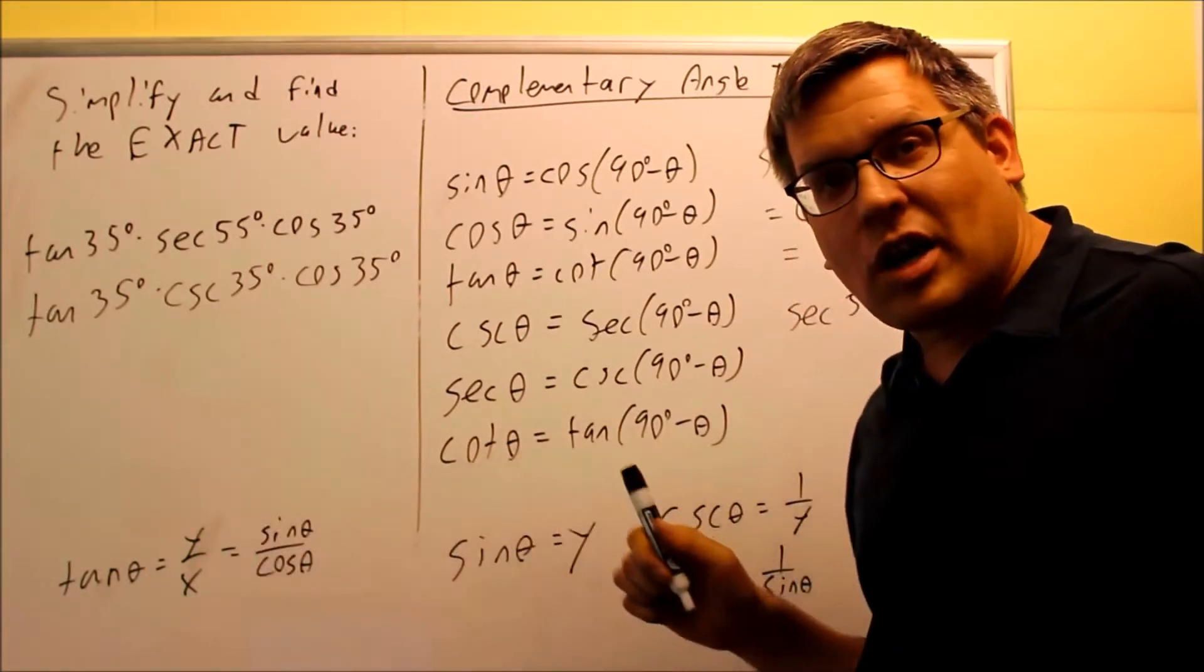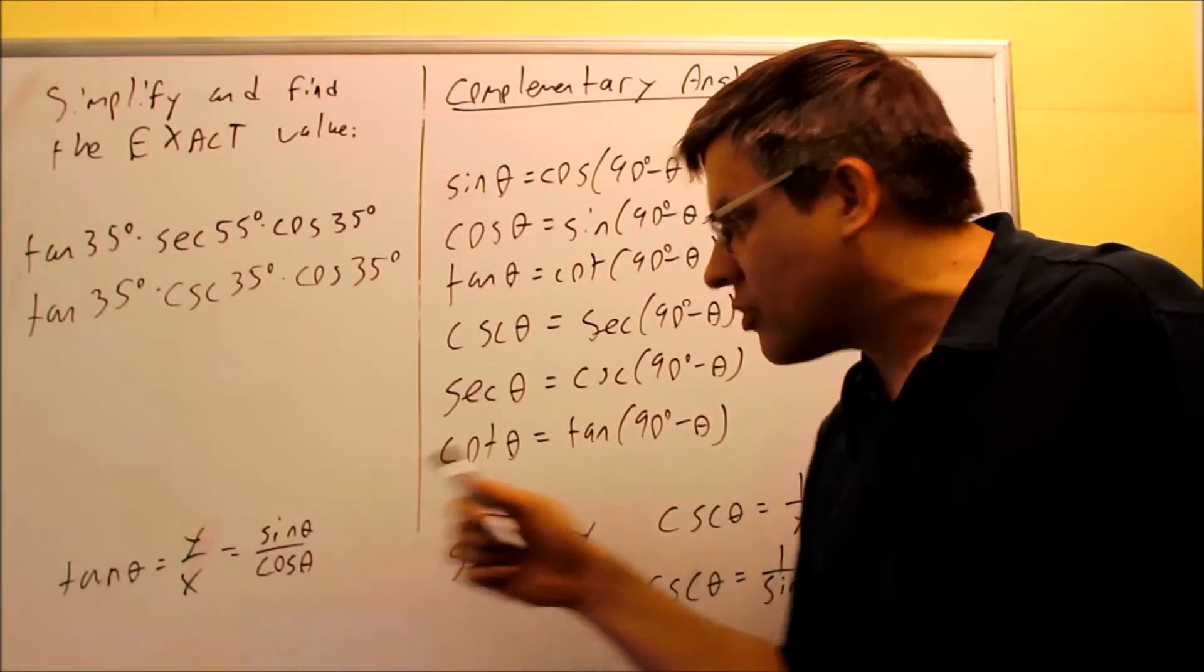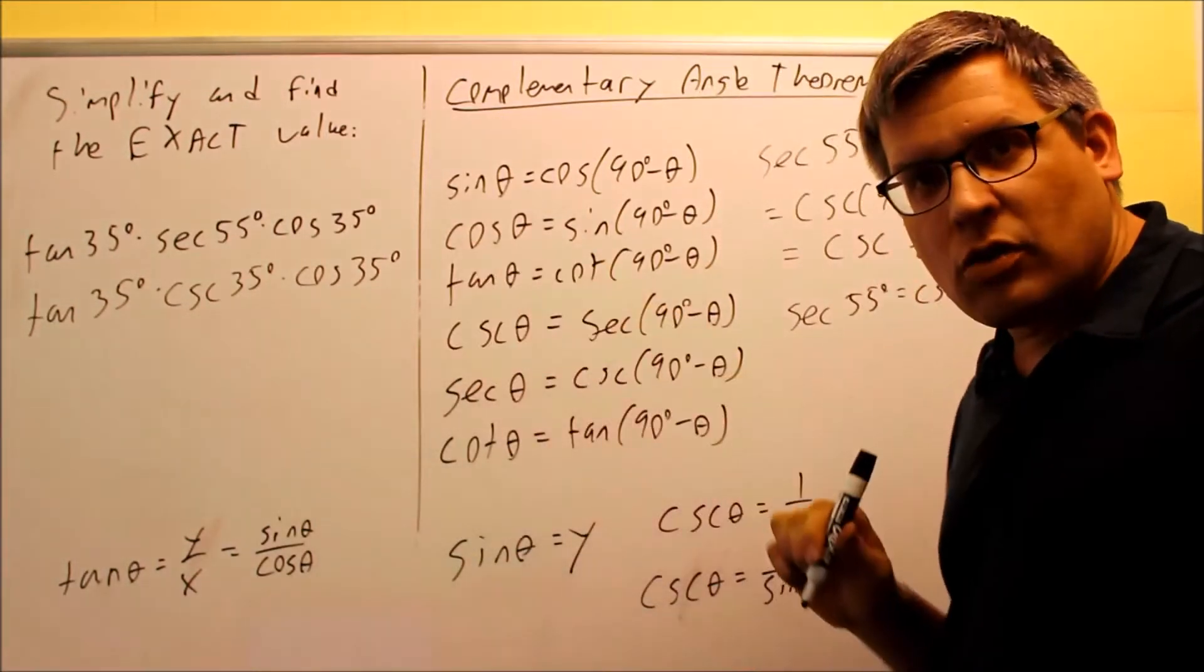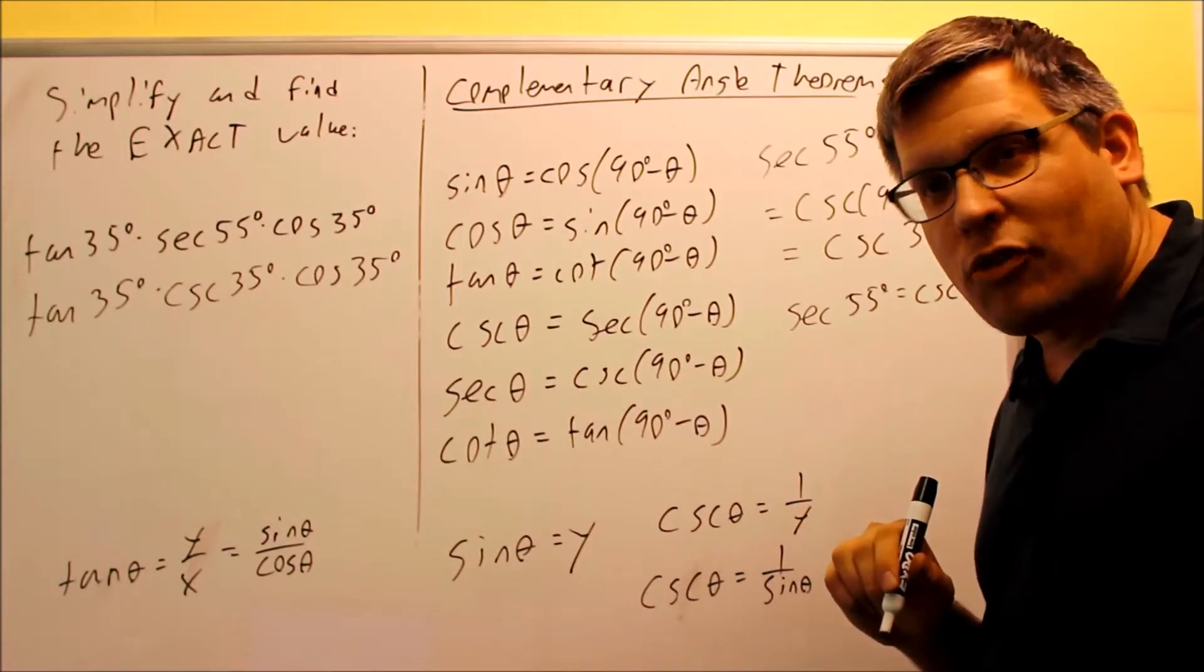Again, it's y over x. The y value is sine from the previous video. The x value is going to be cosine. So, now, I can change everything all into sines and cosines, which is a way I can actually simplify this one.